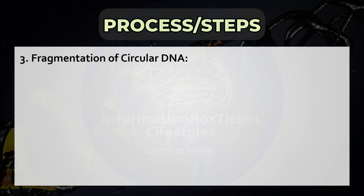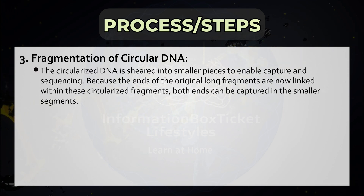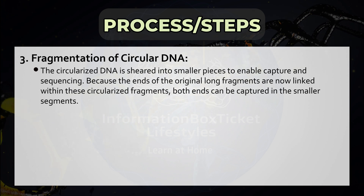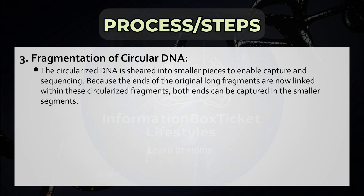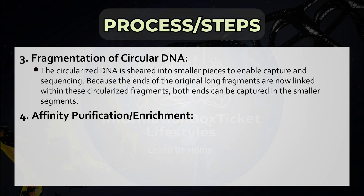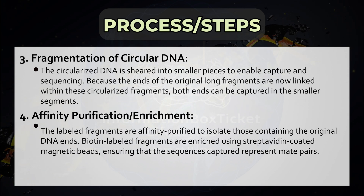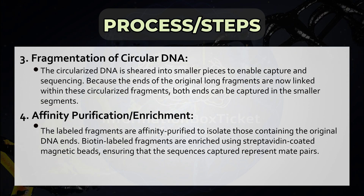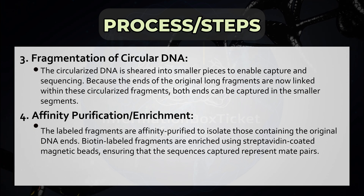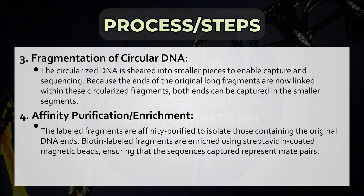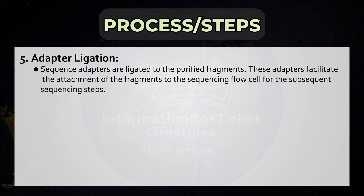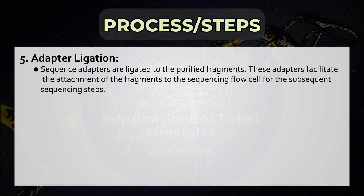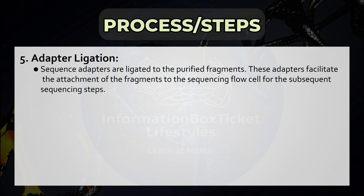Step 3: Fragmentation of Circular DNA. The circularized DNA is sheared into smaller pieces to enable capture and sequencing. Because the ends of the original long fragments are now linked within these circularized fragments, both ends can be captured in the smaller segments. Step 4: Affinity Purification Enrichment. The labeled fragments are affinity-purified to isolate those containing the original DNA ends. Biotin-labeled fragments are enriched using streptavidin-coated magnetic beads, ensuring that the sequences captured represent mate pairs. Step 5: Adapter Ligation. Sequence adapters are ligated to the purified fragments, facilitating attachment to the sequencing flow cell for subsequent sequencing steps.